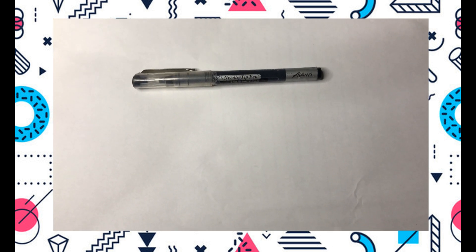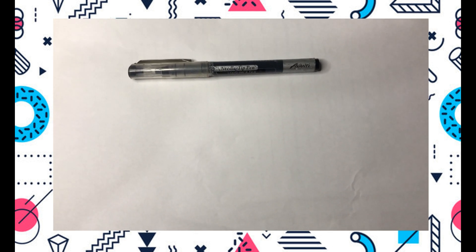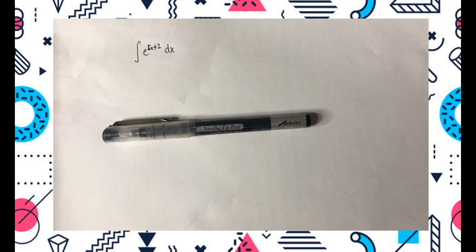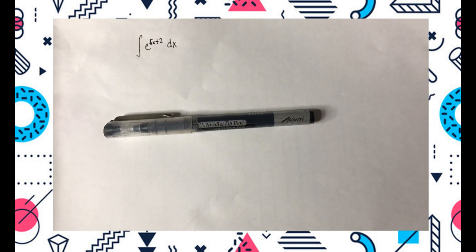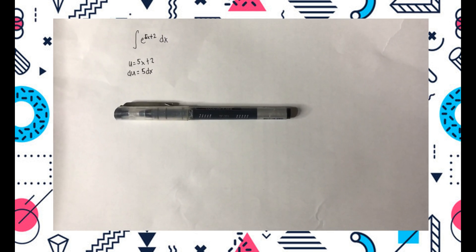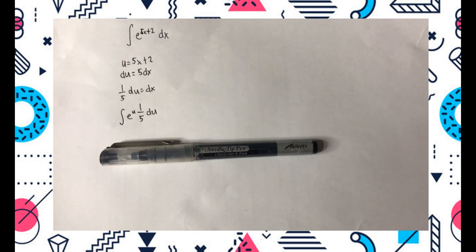Hi guys, I'm here to give an example of how to solve u-substitution. The problem is the integral of e raised to 5x plus 2 dx. Let u equals 5x plus 2, then du equals 5 dx, so one-fifth du equals dx.